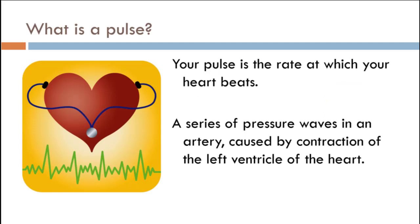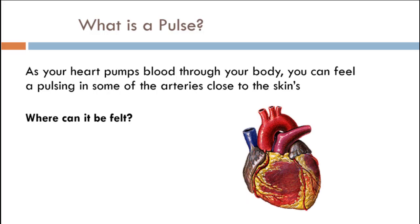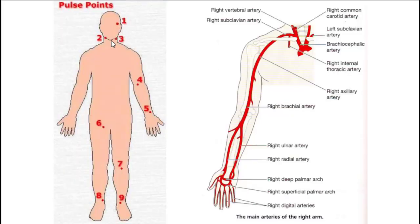The pulse — palpation method — is a series of pressure waves. Every time the heart contracts, it ejects a bolus of blood into the circulatory system. That surge causes blood vessels to expand and then contract back down, and you can feel that in surface arteries. There are nine areas in the body where you can assess pulse: temporal, carotid, brachial artery, and continuing down to the wrist, femoral artery, and further down the leg.